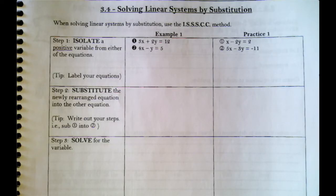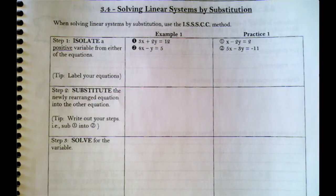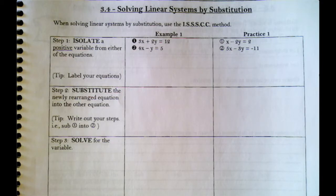This is lesson 3.4: solving linear systems by substitution. When we're solving a linear system by substitution, we're trying to find the point of intersection — just like we did when we were graphing. However, instead of graphing, we're going to do it using algebra. We're going to break each question down step by step and find the solution, then give you a chance to practice right next to our completed example.